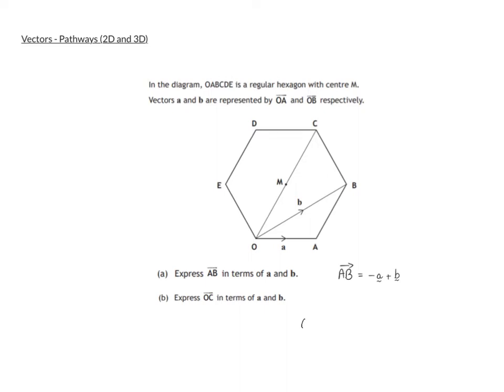So from O to C is the same as to go from O to M and then from M to C. And we also know that O to M is the same as M to C, which is the same as A to B. So therefore it's negative a plus b for O to M, and then it is negative a plus b for M to C.